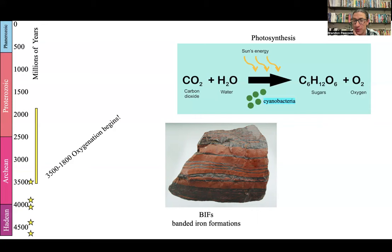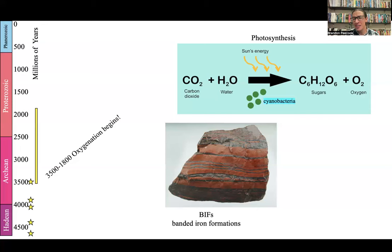All throughout the Archean, there are these rocks you can find around the world today — outcrops from the Archean. These formations, BIFs — banded iron formations — are everywhere. Early Earth had oceans just full of iron, since iron is the single most abundant element this planet is made of. As bacteria produced oxygen, that oxygen — being a really strong chemical — binds to iron. As oxygen binds to iron, they form a compound that falls out of the seawater and is deposited on the seafloor.